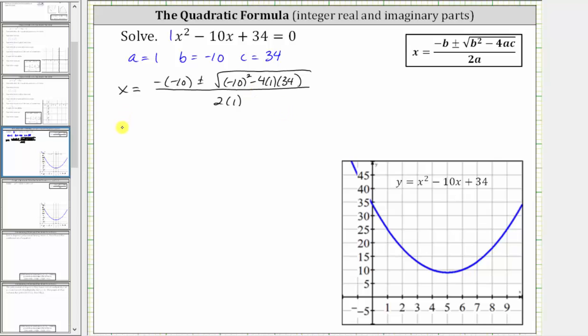And now I begin simplifying. We have x equals the opposite of negative 10, or negative negative 10 is positive 10, plus or minus the square root of the square of negative 10, and then minus 10 is 100.